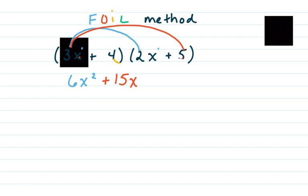So I'm going to multiply positive 4 times 2x. That's going to give me a positive 8x. And then I'm going to multiply this 4 times 5. That's going to give me a positive 20.